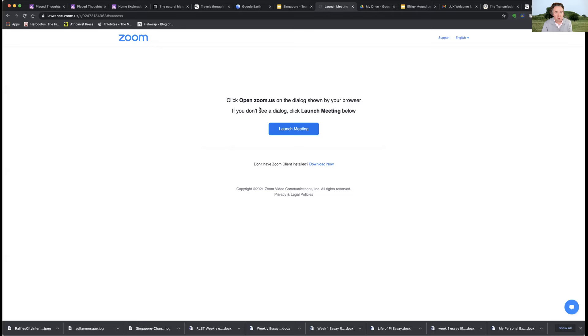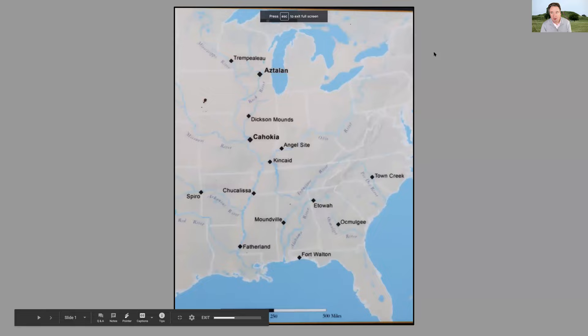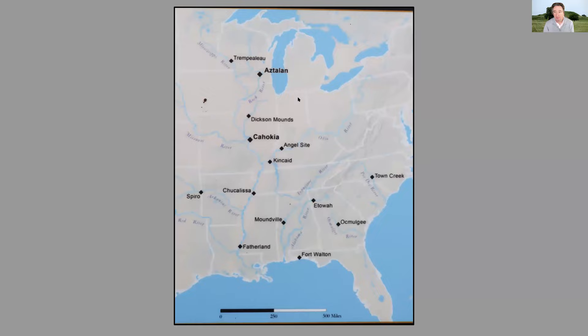Here we are at a map of the central part of the U.S. around 1000 or 1100 AD — well before Europeans arrive in the Americas. Right in the center is Cahokia, where the Missouri and Mississippi rivers meet. Cahokia was the capital city of what we now call the Mississippian culture — a group that developed more settled and even urban ways of living in the Americas.